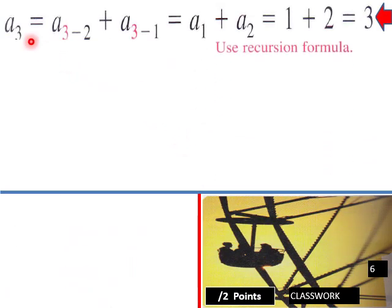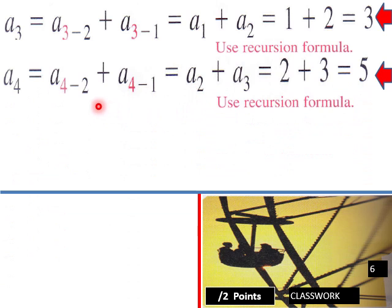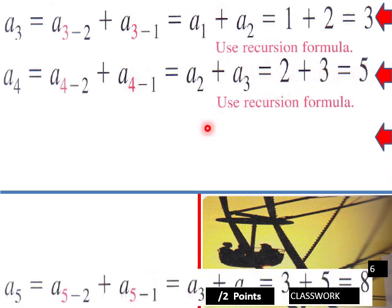Then a₃ = a₁ + a₂ = 1 + 2 = 3. And a₄ = a₂ + a₃ = 2 + 3 = 5, using recursive actions here.